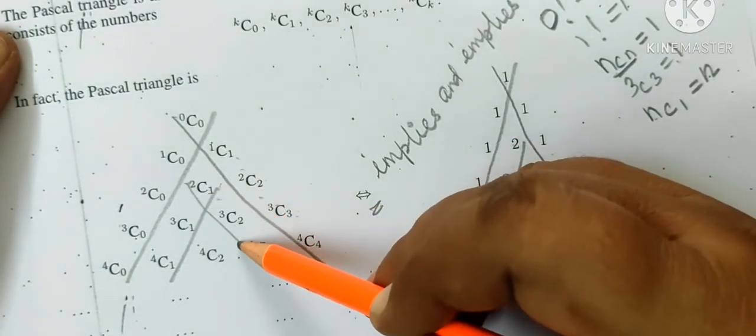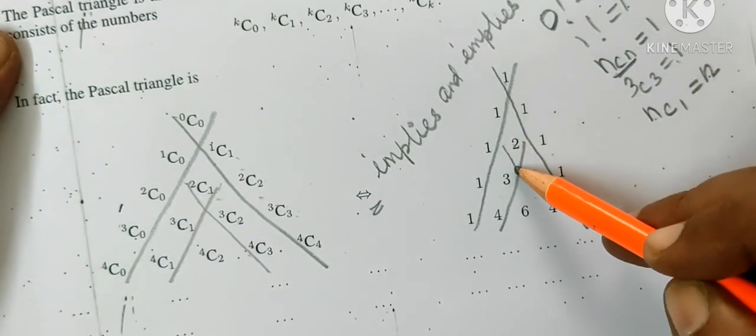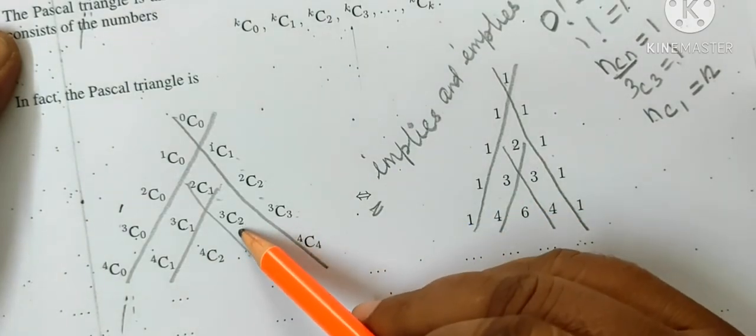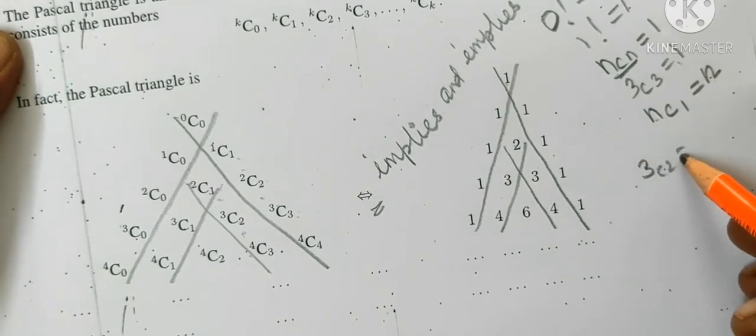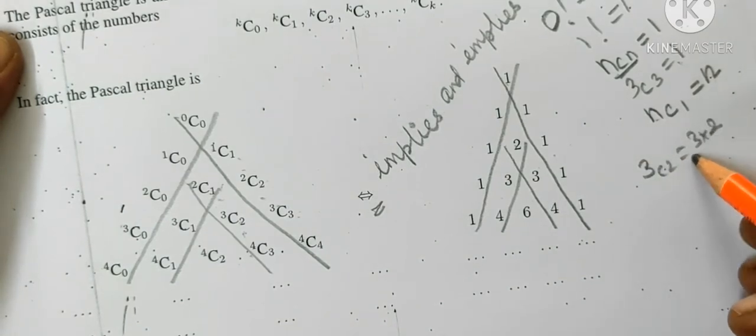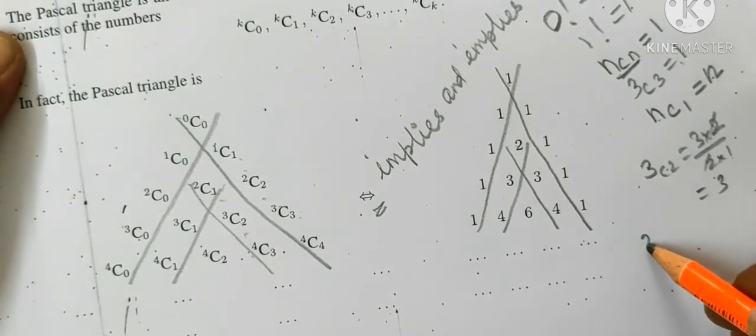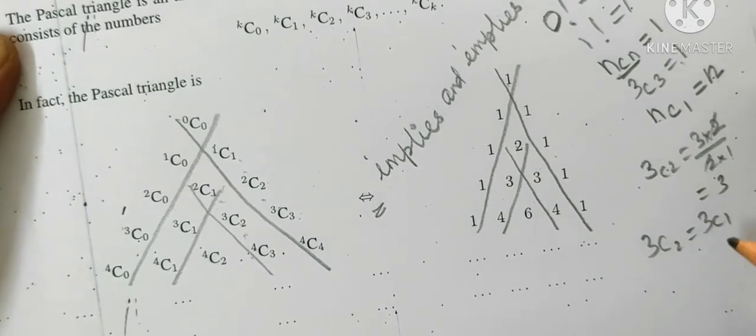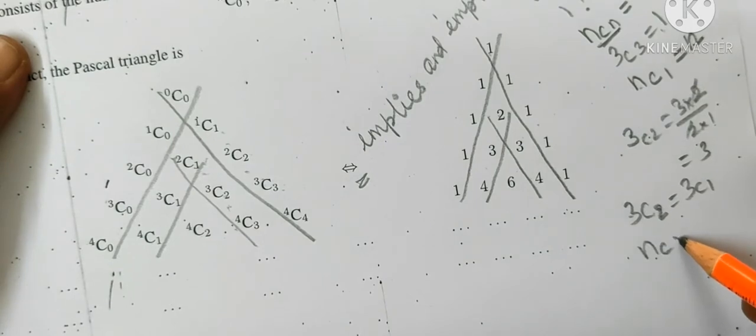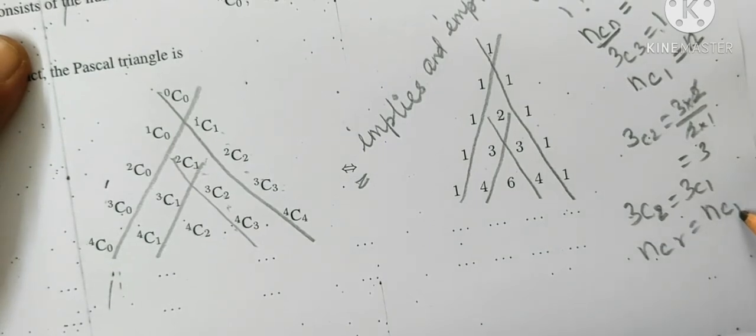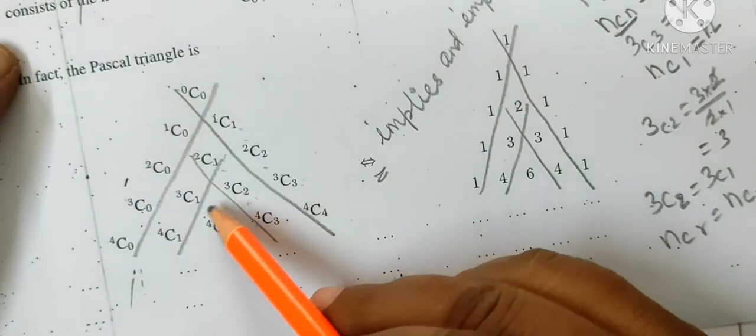If you look at this side, this is 2c1. This is the calculation: 3c2 equals 3 into 2 divided by 2 into 1. This is equal to 3c1. Because we know the formula: ncr equal to nc n minus r.